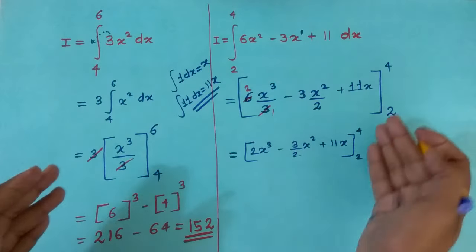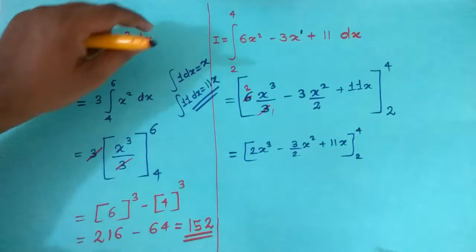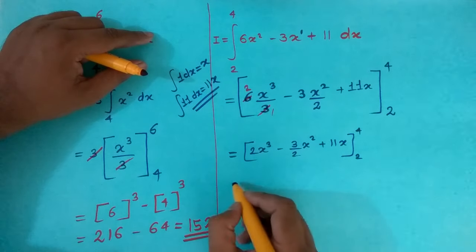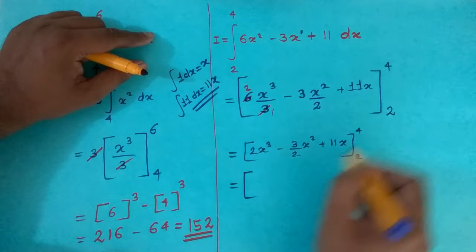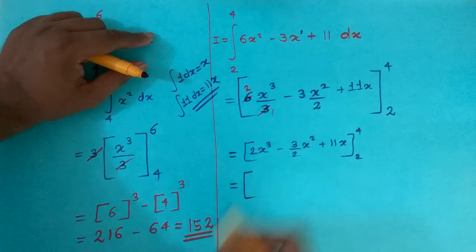Now apply the limits. There is a rule, upper range minus lower range. So my final answer is put upper range 4.